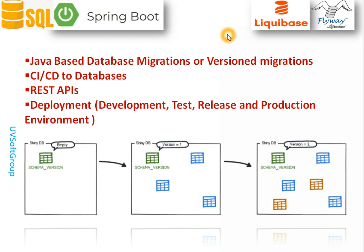CI/CD means you need to do continuous integration and continuous deployment to the databases on the backend servers, and your applications — whether Spring Boot replication or other Java applications — need to synchronize at the same time. That means you synchronize your database migration process and your application deployment process, so when you deploy the application in an environment, you need to have the same versions of the database in the same environments. That's really important.